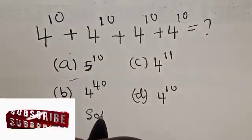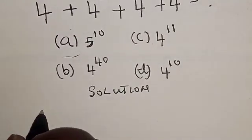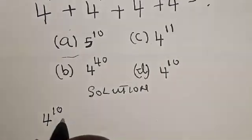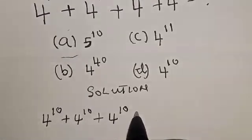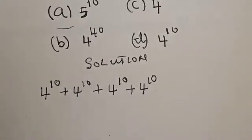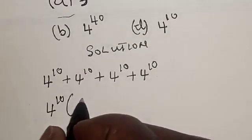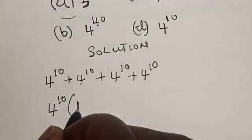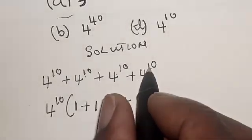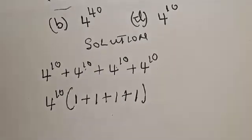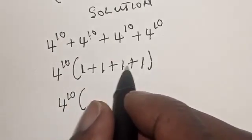Solution. The given question is 4 raised to power 10 plus 4 raised to power 10 plus 4 raised to power 10 plus 4 raised to power 10. Since 4 raised to power 10 is common, let's bring it out: 4 raised to power 10 bracket 1 plus 1 plus 1 plus 1. That gives us 4.